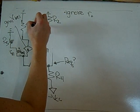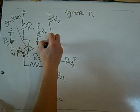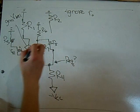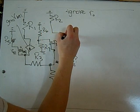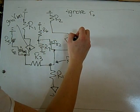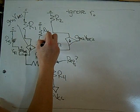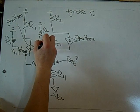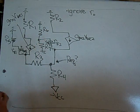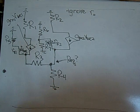Over here, this becomes grounded because that was connected to VCC. The base has the resistor rpi-2 in it now — this was the second transistor. This is GM-2 times VBE-2, where VBE-2 is the voltage across rpi-2. Down here, we also need to ground this because it's a DC voltage source.